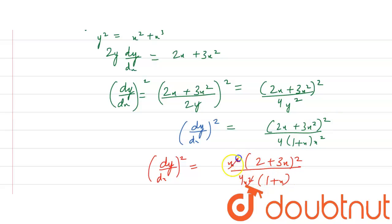So, this and this can be cancelled out. And we have now dy by dx whole square will be 2 plus 3x whole square upon 4 into 1 plus x.